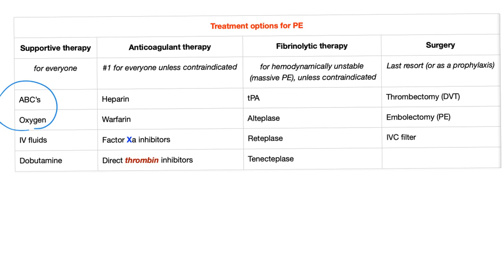Next, we have anticoagulant therapy, unless contraindicated. Heparin first, and then warfarin. But you start with heparin — this is called the heparin bridge — until warfarin kicks into gear. Also available: factor Xa inhibitors or direct thrombin inhibitors.